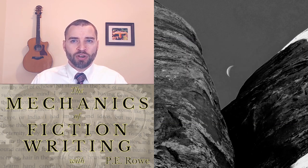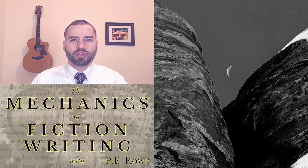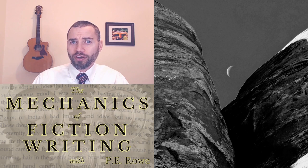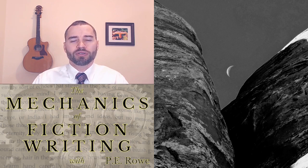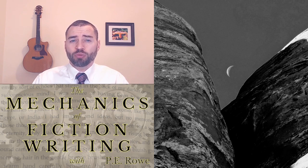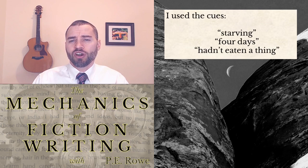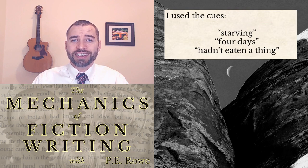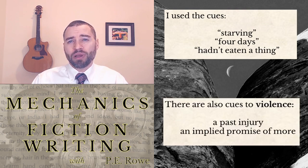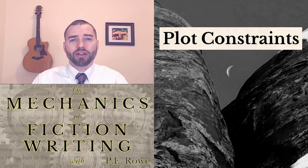If I were to stop the simulation here and walk away, no doubt you'd be scratching your head and wondering why I stopped. Poor Juby is left starving to death in the jungle and you just leave him there? If you do care, my answer would be that you immediately recognize Juby is in danger. I used the cues 'starving,' 'four days,' and 'hadn't eaten a thing' to make you recognize he needs to eat. There are also cues to violence, a past injury, and an implied promise of more if Juby tries to get up to the fruit. These are called plot constraints.